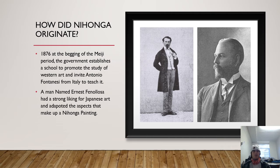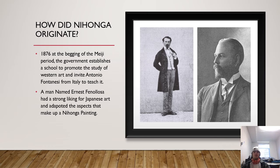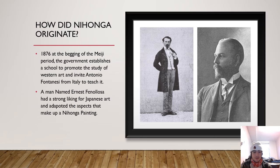Nihonga originally arose in 1876, at the beginning of the Meiji period, when the Meiji government established an art school to promote the study of Western art and invited the Italian painter Antonio Fontanesi to teach. Ernest Fenollosa came to Japan two years later to teach philosophy at Tokyo University, and while there showed a very strong interest in Japanese art and highly praised it. The word Nihonga was first adopted when Fenollosa gave his lecture on the new theory of art at the Dragon Pond Society in 1882, pointing out specific characteristics that give Nihonga paintings their name. The man on the left is art teacher Antonio Fontanesi, and the man on the right is the one who coined the term Nihonga, Ernest Fenollosa.